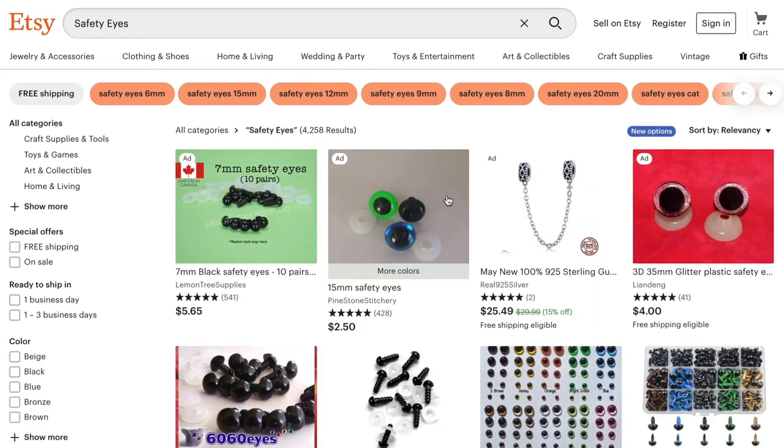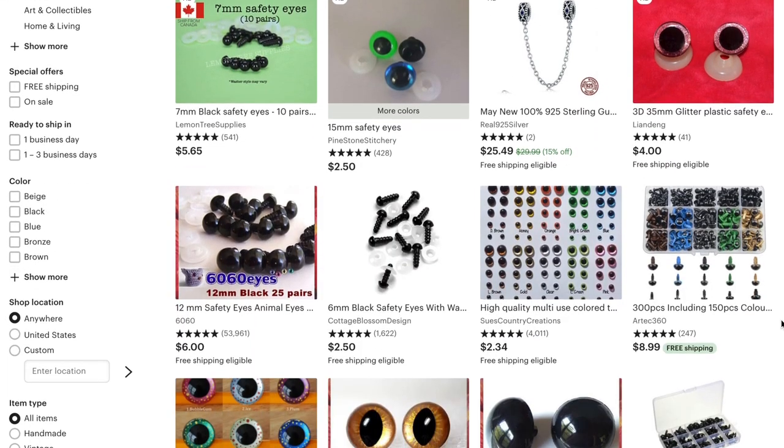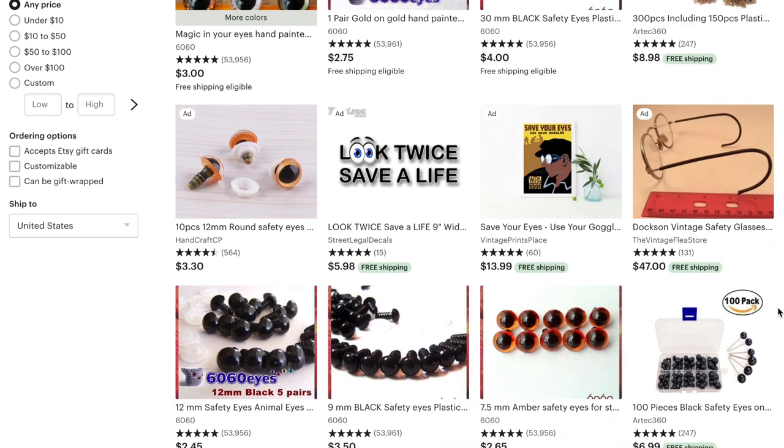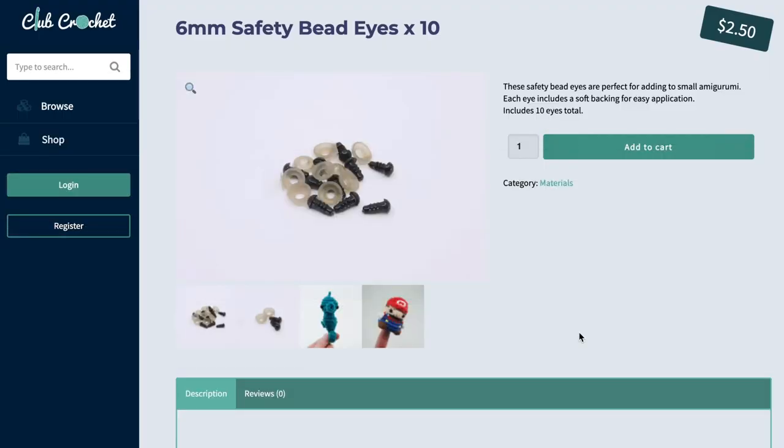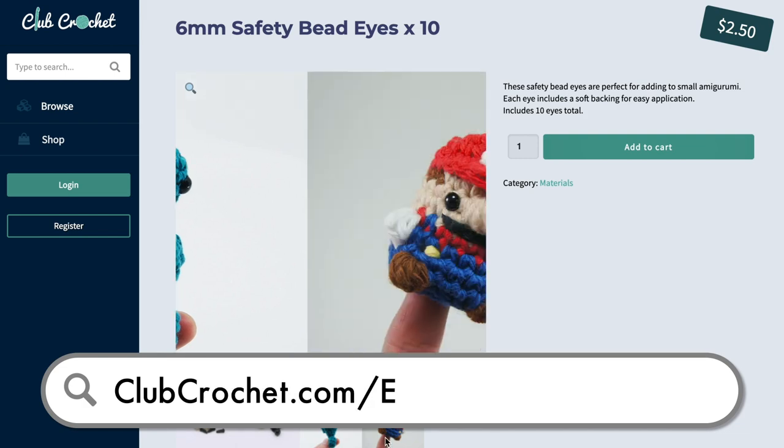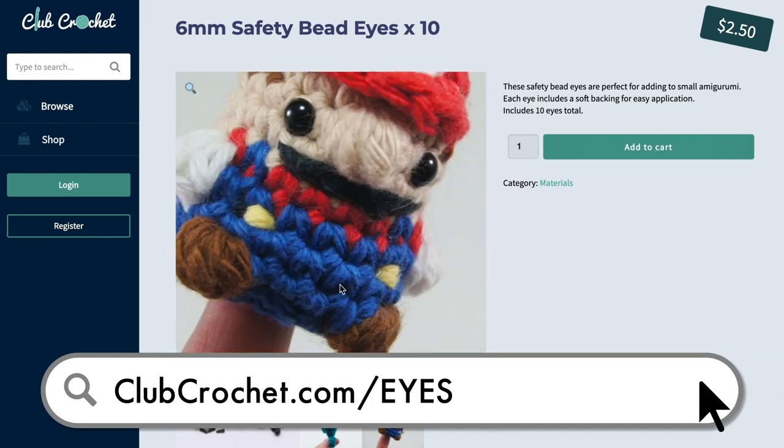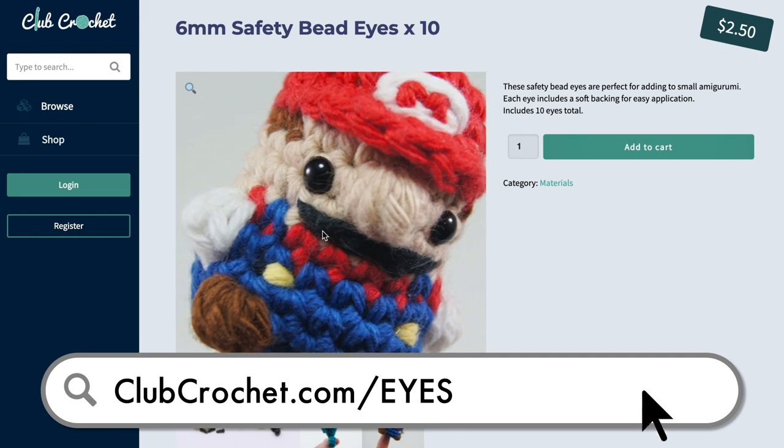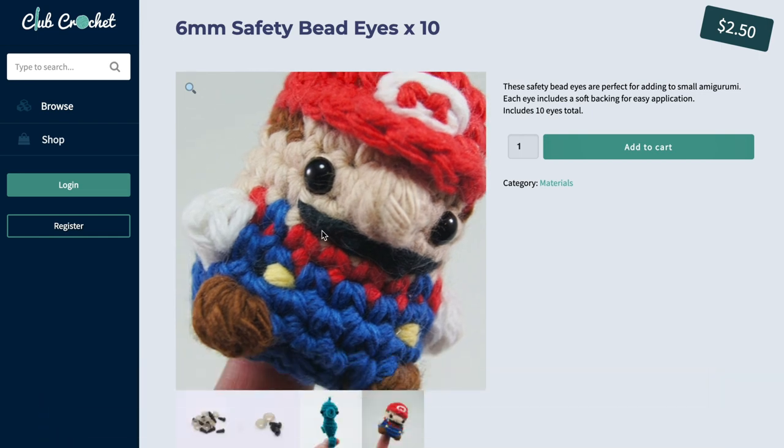My favorite place to search for weird safety eyes is Etsy, but you can also find them at your local hobby shop. You can also purchase the exact same eyes that I use for my amigurumi using the link in the description or at clubcrochet.com slash eyes. This is also a great way to support this site and channel if you'd like to.